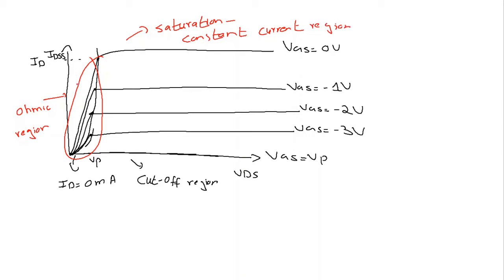In the ohmic region, if you look at the different values of VGS, the slopes of these lines are different. Although the slopes are all linear, they differ from one another. The region to the left of the pinch-off locus is the ohmic region, and the region to the right is the saturation region. In the ohmic region, the junction field effect transistor can be used as a variable resistor, because by varying the VGS — the gate to source voltage — the channel resistance of the JFET varies.